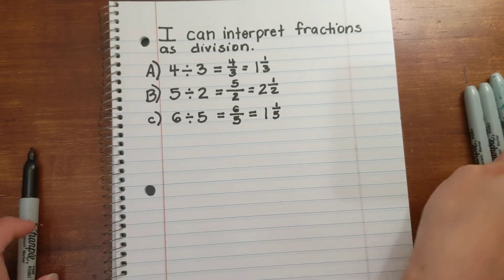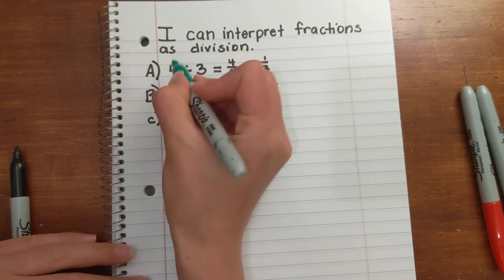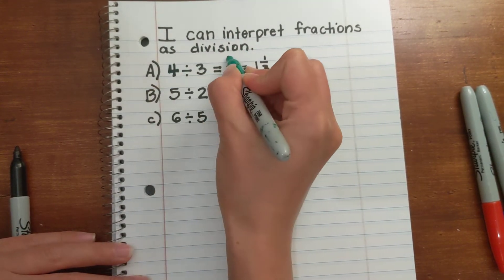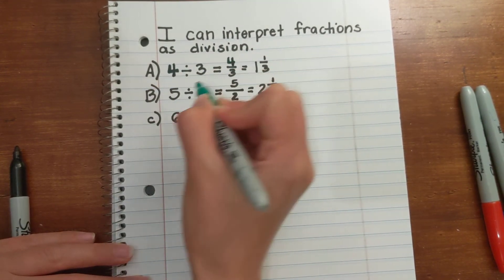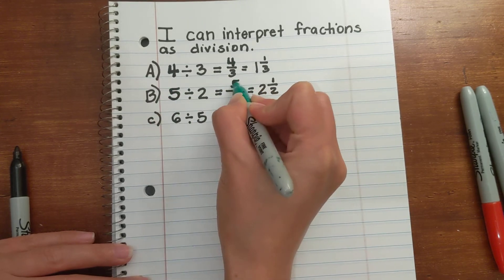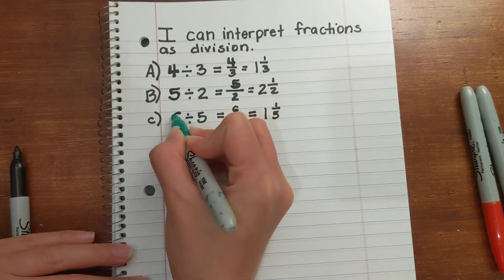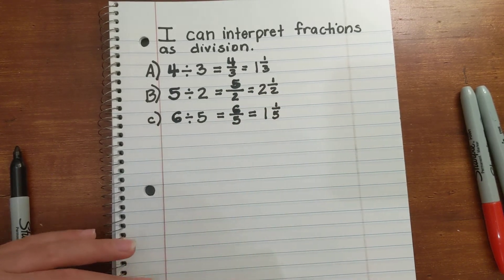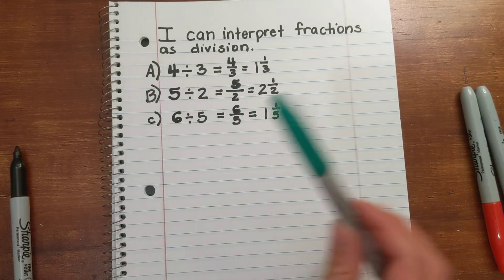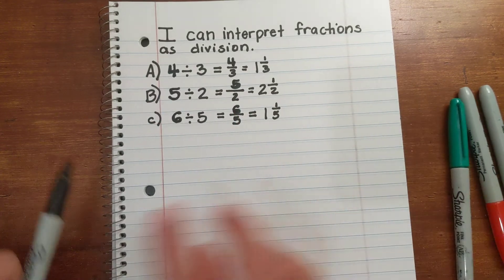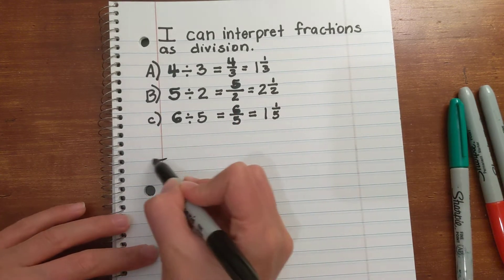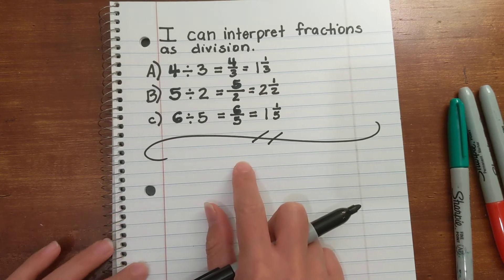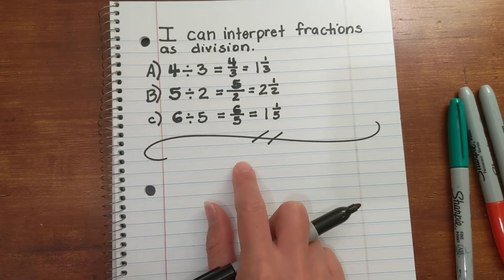I'm going to write over the first number — the dividend — and the numerator, so you can see that pattern. The next part: you'll see word problems that are going to give you two numbers.